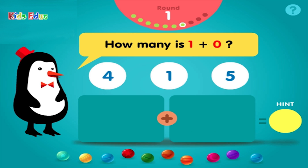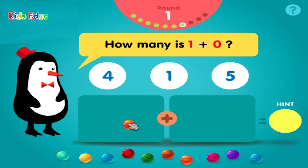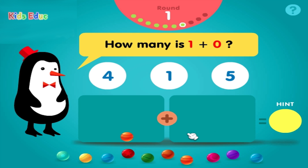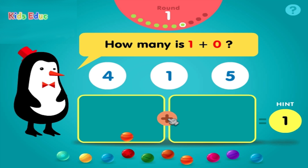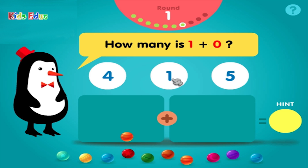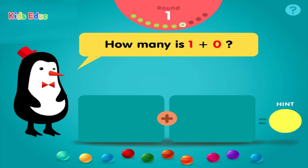How many is 1 plus 0? 1, plus 0, equals 1. Radical!